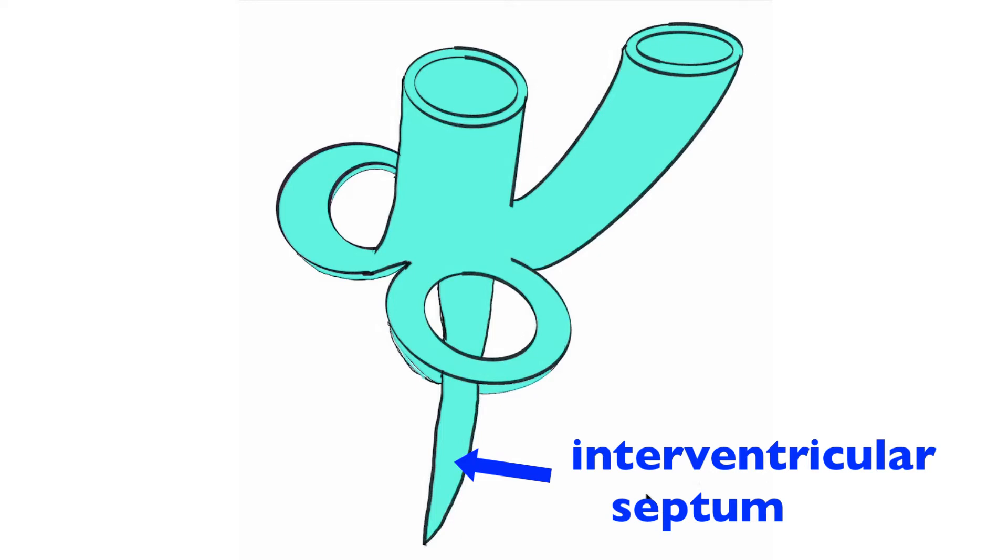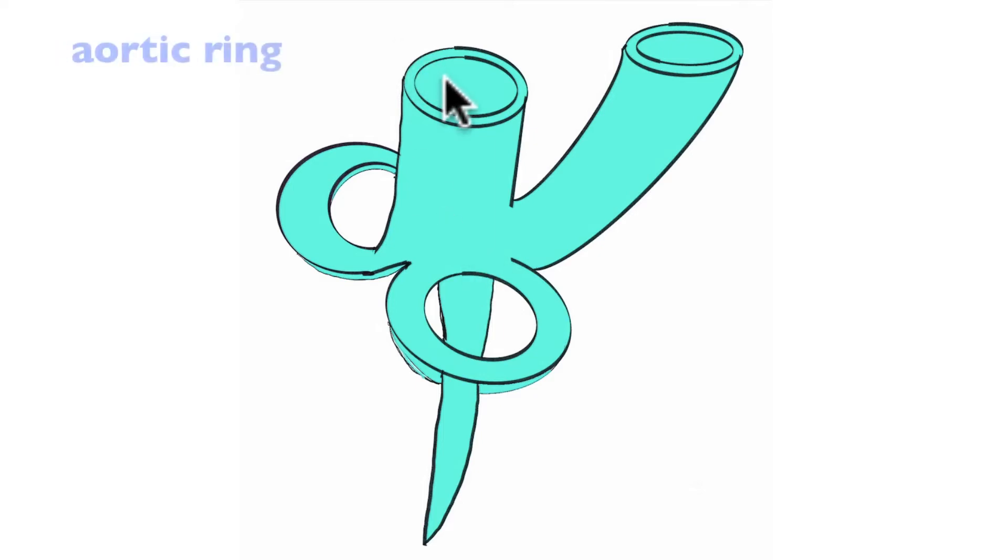And then it also provides some fibrous rings that maintain some support and integrity of the valves and the direction blood is going to flow through the heart, such as the aortic ring right here, which is going to provide support for the aortic semilunar valve, or at least the entrance and base of the aorta. This would be the pulmonary ring for the pulmonary artery.